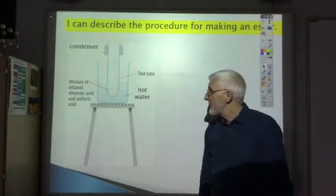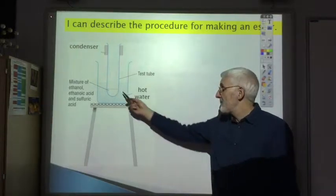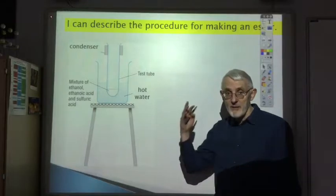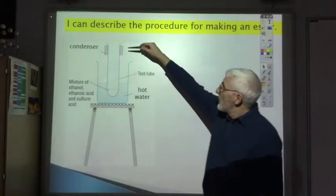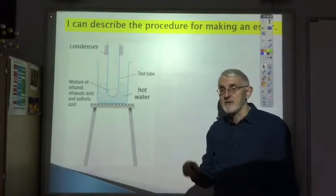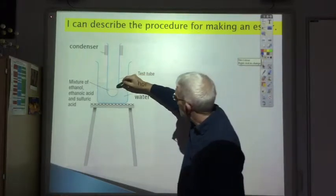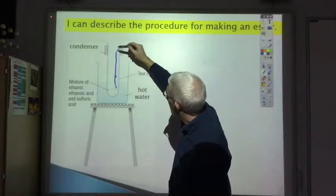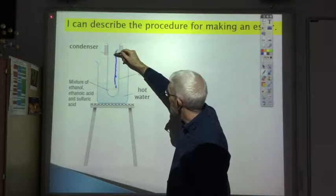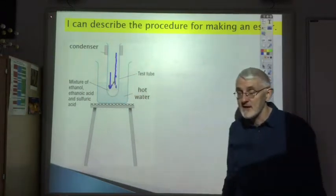The ester we're trying to make is a very volatile substance, so at the higher temperature being used there's a great possibility we'll lose it through evaporation. To prevent this, we wrap a condenser around the top of the test tube — just a wet paper towel held with an elastic band. As the ester evaporates, it reaches the cool part of the test tube, condenses back into a liquid, and falls back into the reaction mixture, cutting down our losses.